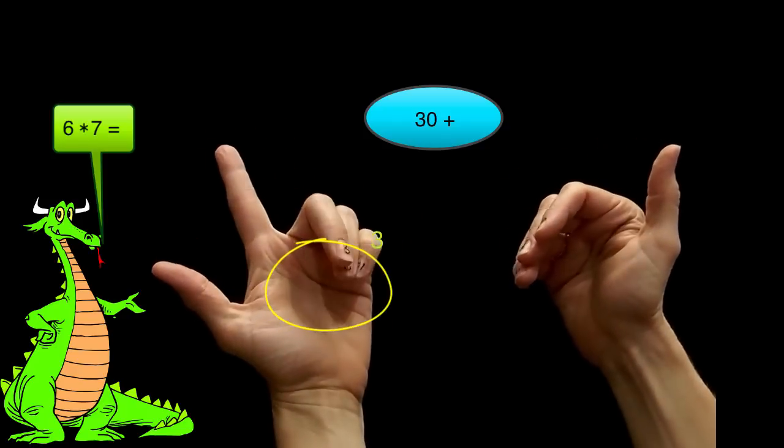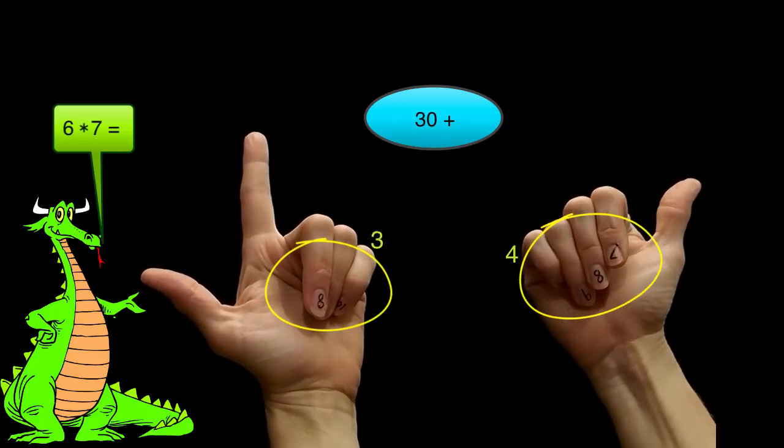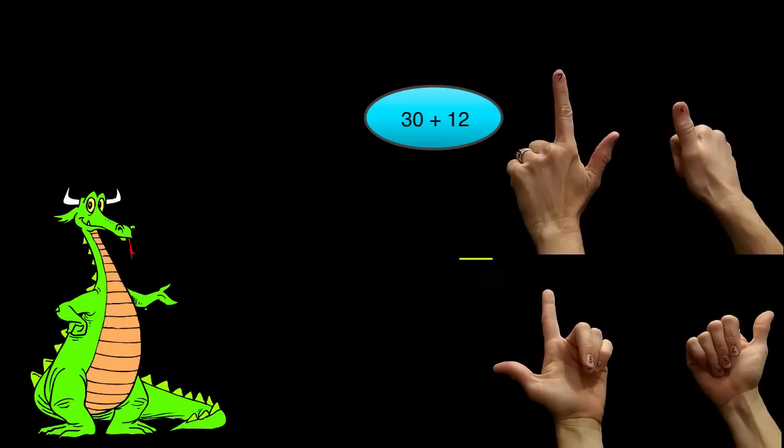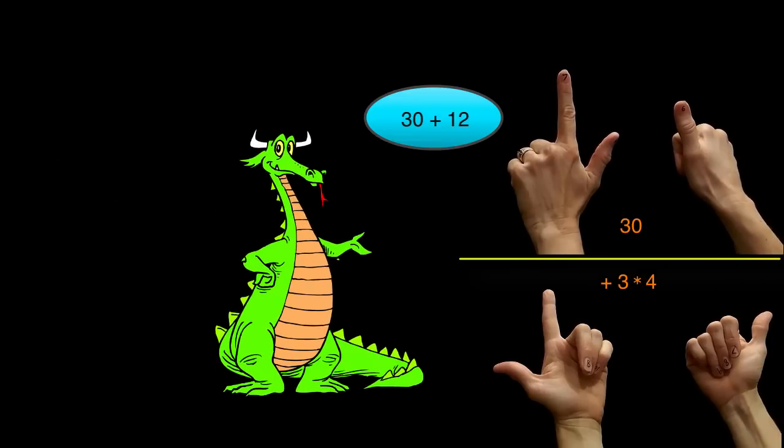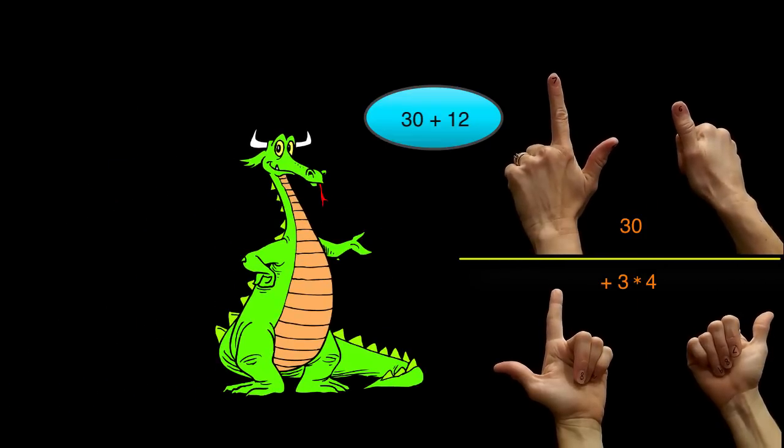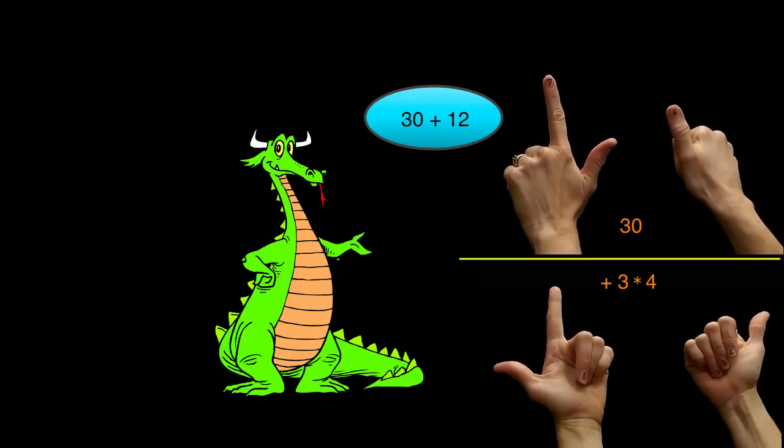On the other side I have 3 on one hand and 4 on the other. 3 times 4 is 12. It's okay that this is more than 9. This second step will sometimes affect the tens digit of the solution. We just need to add it up like usual. 30 plus 12 is 42. So therefore 7 times 6 is 42.